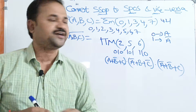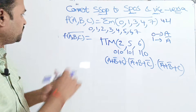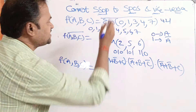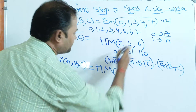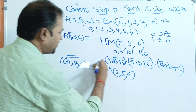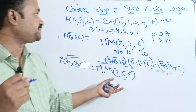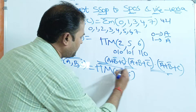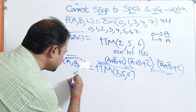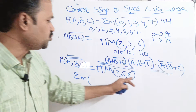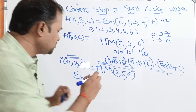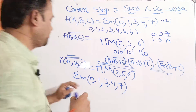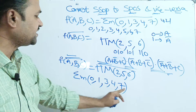Now let us discuss about how we can convert SPOS to SSOP. For that purpose, let us take the expression as F of A, B, C equal to pi capital M of 2, 5, 6. This is the second problem. We have to convert this SPOS expression to SSOP expression. Simply we have to perform the complement operation: pi complement means sigma, capital M complement means small m. The terms not present are: 0, 1, 3, 4, and 7. So the output is sigma M of 0, 1, 3, 4, 7.